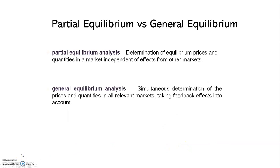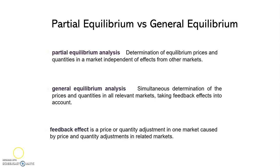General equilibrium analysis is going to determine the price and the quantity in all markets at the same time, simultaneously. And it explicitly takes feedback effects into account. But what are feedback effects? Feedback effects are a price or quantity adjustment in one market that is caused by price and quantity adjustments in related markets.